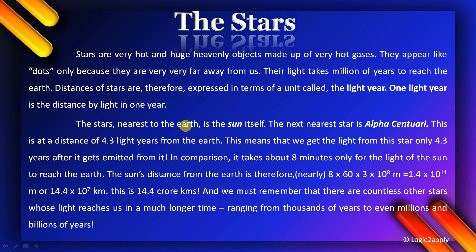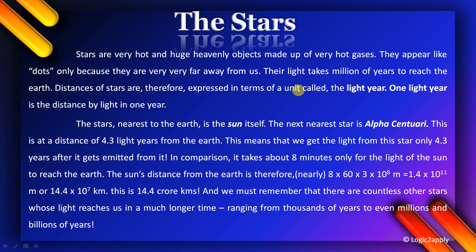Let's recall: stars are hot and huge heavy objects made of hot gases. They appear as dots because they are very far from us. The light from stars takes millions of years to reach Earth. The distance of stars is represented in a unit called the light year.